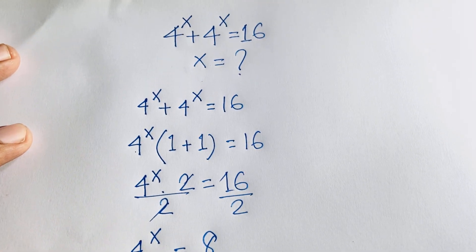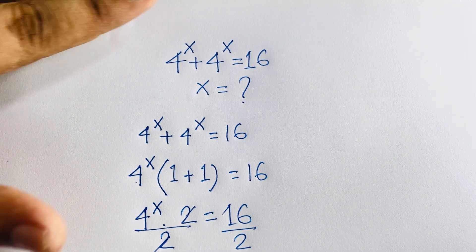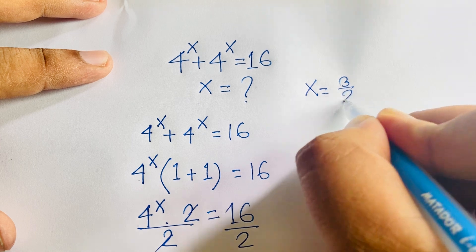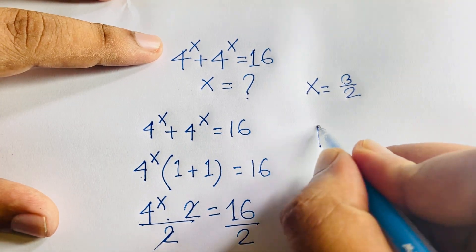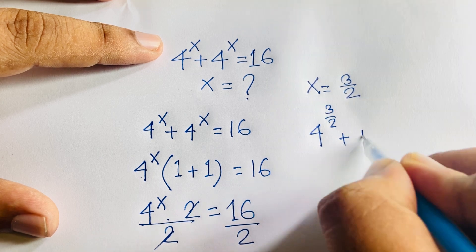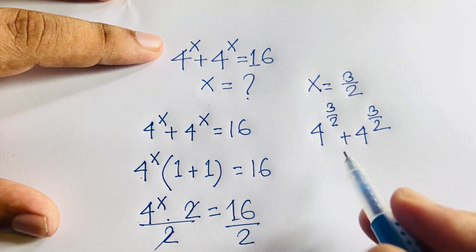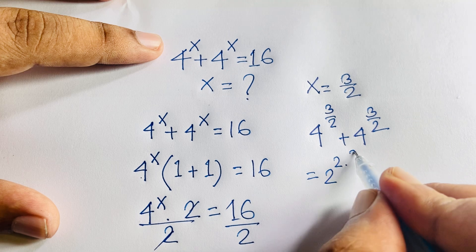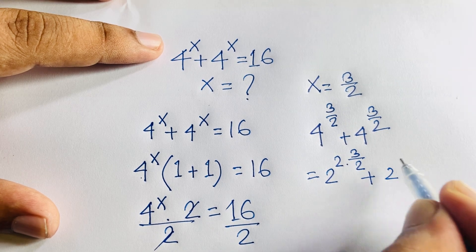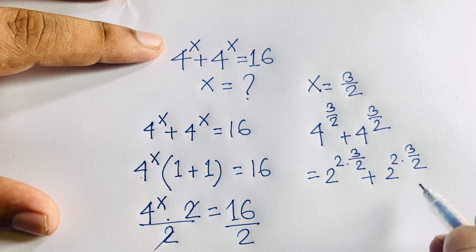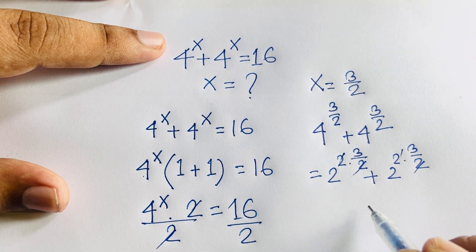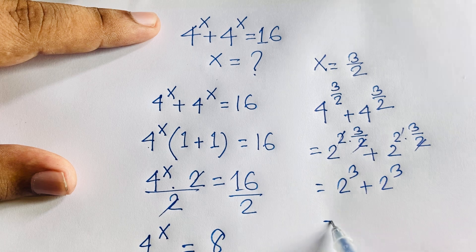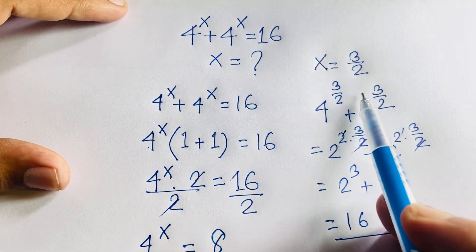Let's check: our question is 4 to the power x plus 4 to the power x equals 16, and our answer is x equals 3 over 2. So 4 to the power 3 over 2 plus 4 to the power 3 over 2. Since 4 is 2 to the power 2, we get 2 to the power 2 with exponent 3 over 2, twice. The 2s cancel giving 2 to the power 3 plus 2 to the power 3, which is 8 plus 8 equals 16. So x equals 3 over 2 is our correct answer.